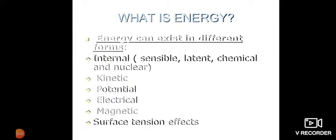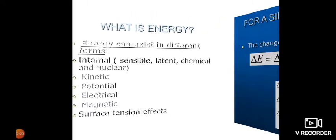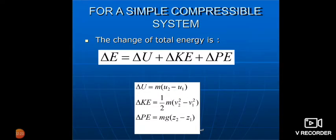Energy can exist in different forms, such as internal energy — which includes sensible, latent, chemical, and nuclear — kinetic energy, potential energy, electric energy, magnetic energy, and surface tension effects. For a simple compressible system, the change in total energy equals the change in internal energy plus the change in kinetic energy plus the change in potential energy.